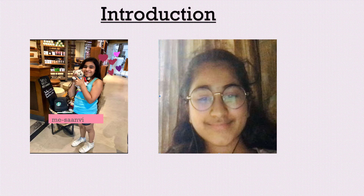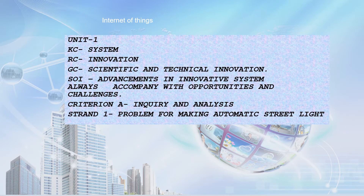We hope you enjoy the presentation. As you can see, this is our KC, RC, GC, SOI, Criterion A and Strand 1 of the Unit Internet of Things. The KC is System, RC is Innovation, GC is Scientific and Technical Innovation. The SOI is: Advancements in Innovative Systems always accompany opportunities and challenges. Our Criterion A is Inquiry and Analysis and Strand 1 is focused on making automatic streetlights.